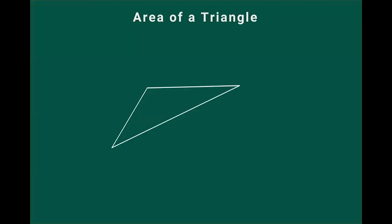Here we have a triangle, and we shall name this triangle JKL. The formula for finding out the area of a triangle — you've known this right from the upper primary classes — is: area of a triangle equals half into base into height. This is a straightforward formula. You just need to determine the base and the height, and you can find out the area of the triangle.